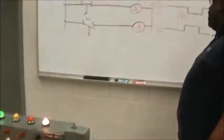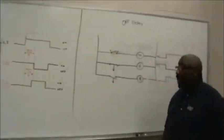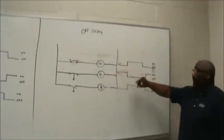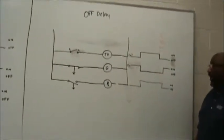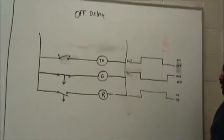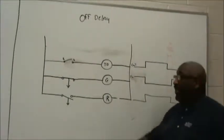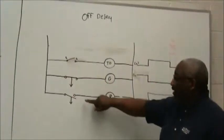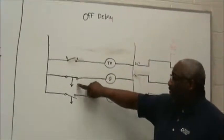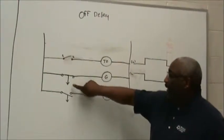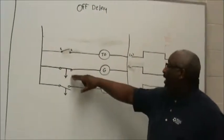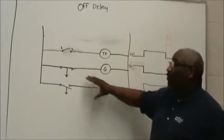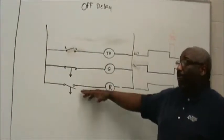Now next, I want to move to the off-delay. The off-delay timer has what we call instantaneous contacts. I have the exact same setup, with the exception I'm using an off-delay timer because the arrow is pointing down, which is different from the on-delay. That's how you tell whether you're working with an on-delay or off-delay timer.